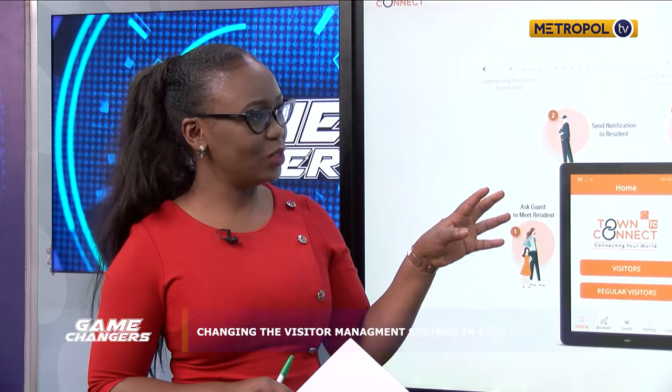So how does one enroll to start enjoying the service? For buildings, apartments, estates, and residential gated communities, you need to get in touch with us and we come on the ground to set you up. For individuals who are not in that setup, they just download the app, though they won't have access to the visitor management module. Your building or estate has to get in touch with us for us to set you up.